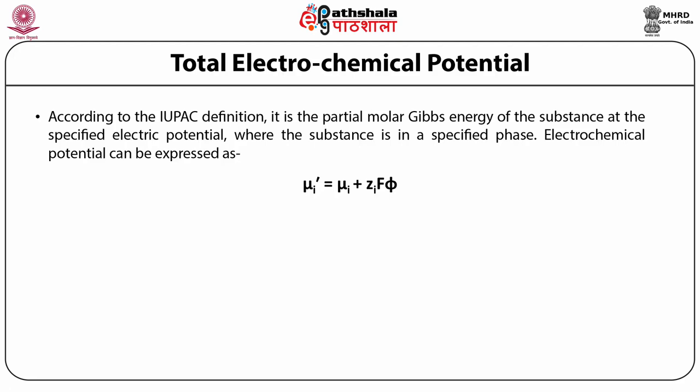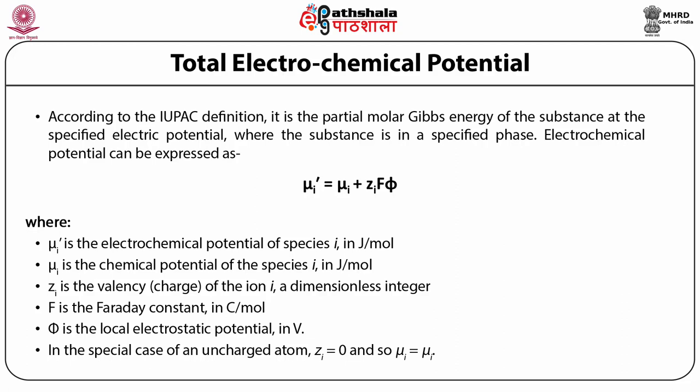Electrochemical potential can be expressed as: μ̃ᵢ = μᵢ + ZᵢFφ, where μ̃ᵢ is electrochemical potential of species i in joules per mole, μᵢ is the chemical potential of species i in joules per mole, Zᵢ is the valency or charge of ion i, F is the Faraday constant, and φ is the local electrostatic potential in volts. In the special case of an uncharged atom, the charge is zero, so electrochemical potential equals chemical potential.